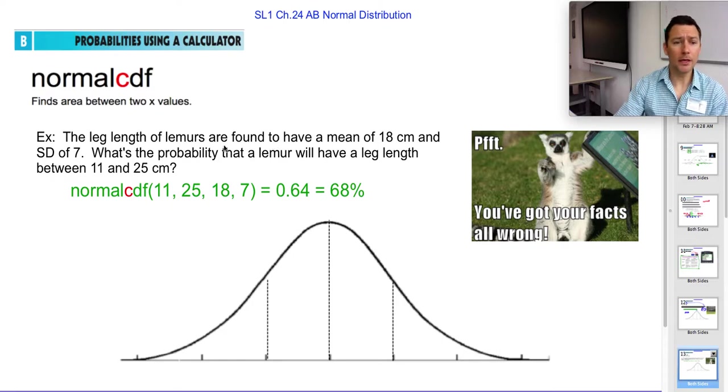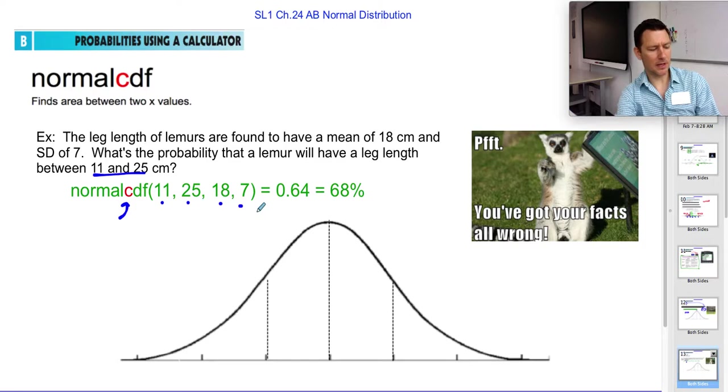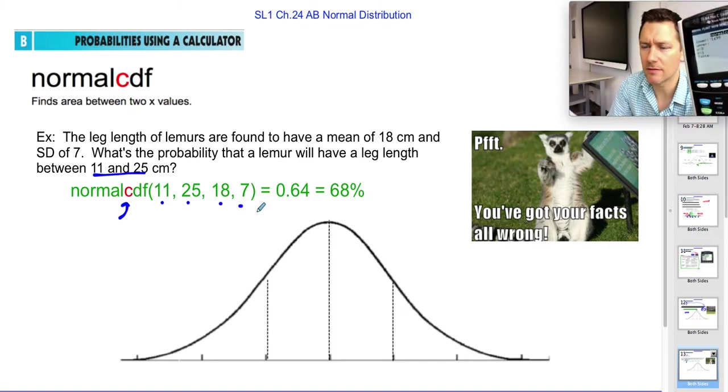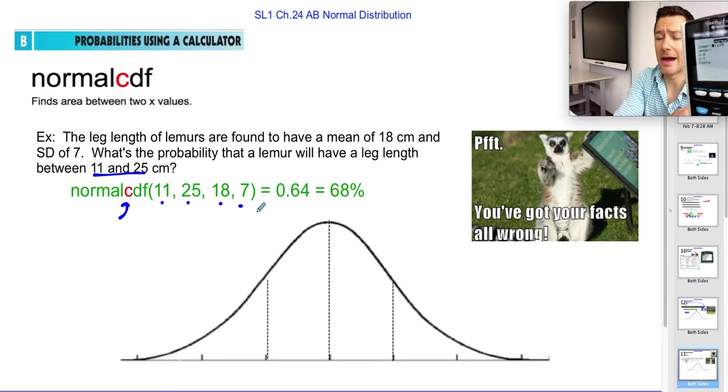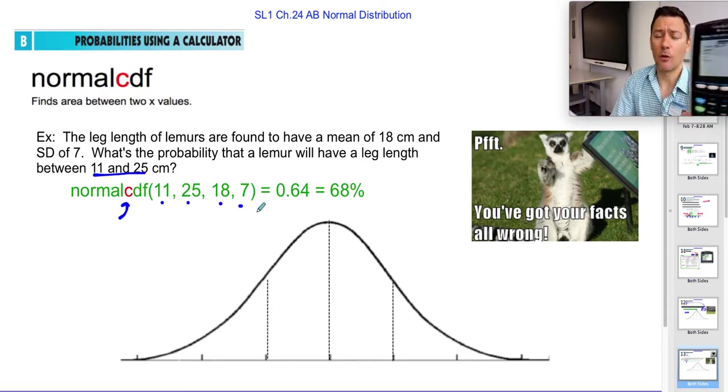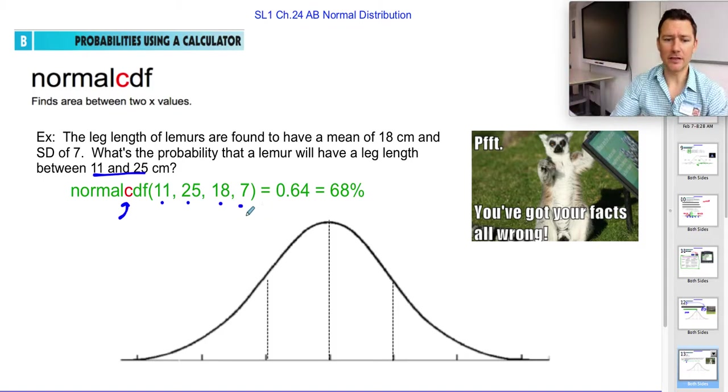CDF is between, maybe collectively. The leg length of lemurs are found to have a mean of this and standard deviation of that. What's the probability that they will be between these ranges? You do the same thing. You just use CDF. You use your lower range and your upper range, your mean, and your standard deviation. So it's in the same place, distribution, CDF, lower range. It might say, like, mine right now says negative 1e to the 99. That means it's going down to infinity.